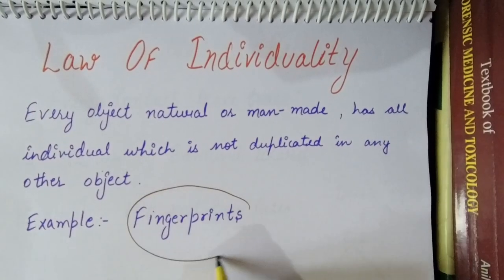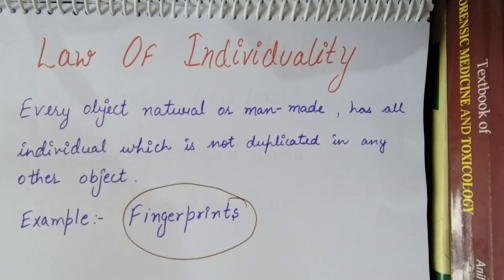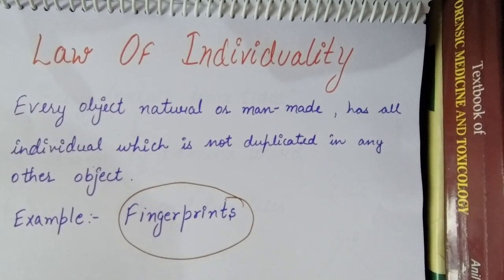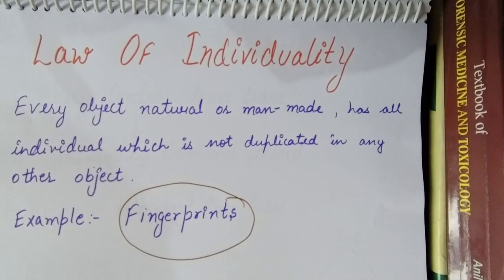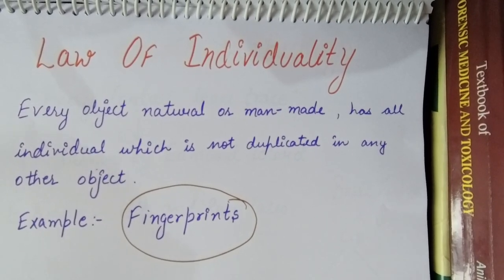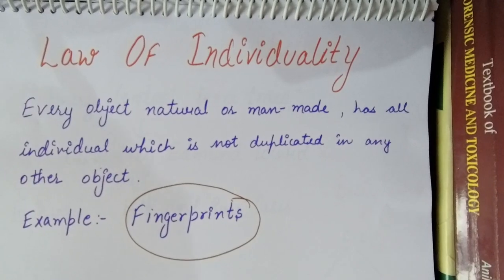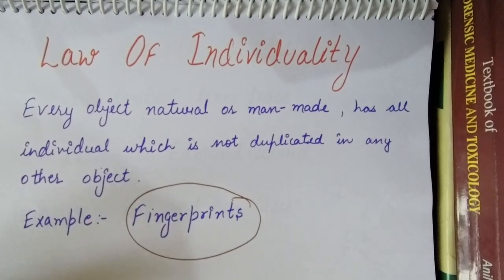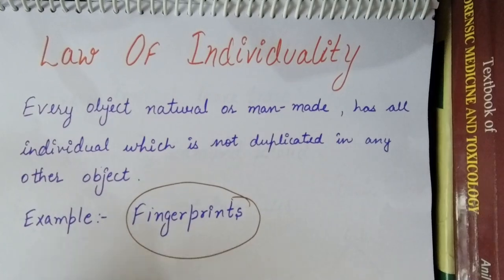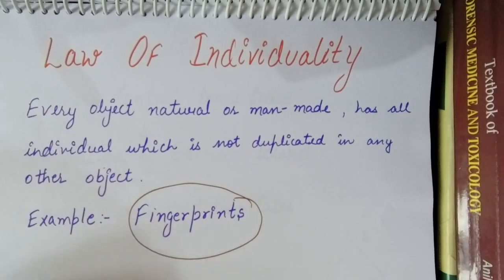Like fingerprints. We all know that even twins have similar DNA, but their fingerprints will always be different. So this is the Law of Individuality — the basic law on which Forensic Science works.